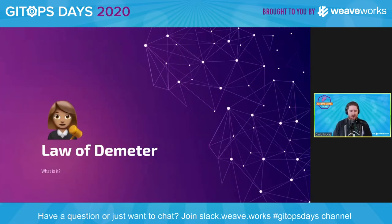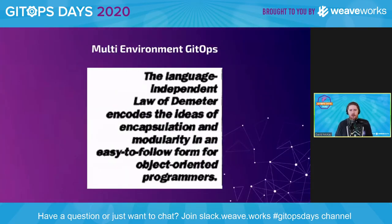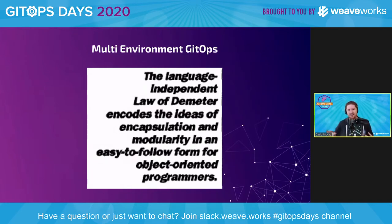Now, what about this Law of Demeter thing? You may be familiar with it — it's quite old, at least as far as computing goes. This law came around in 1987-89, and the whole concept, the whole point of this law, was to help us write better object-oriented code.